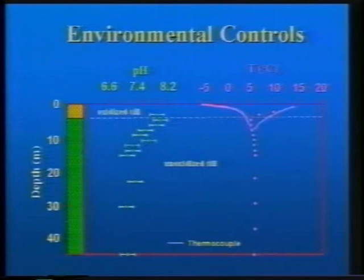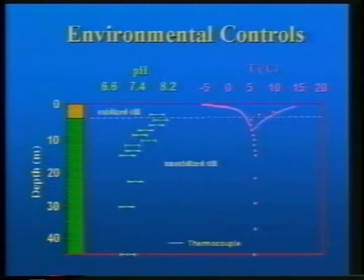As far as temperature goes, below seven meters in these aquitards it is between 5.3 and 5.6 degrees centigrade. The upper seven meters show seasonal fluctuations, exhibited by the solid lines, which are the result of max/min readings from thermocouples installed down to seven meters every 30 centimeters, monitored for about three years. You can see the temperature fluctuations up above and the pH profile.